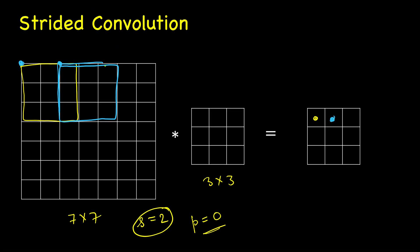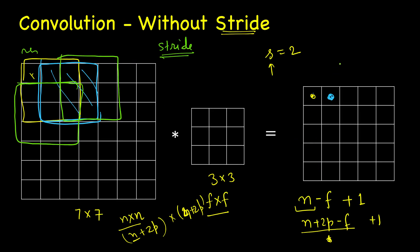So we will place the window here, do element-wise multiplication and calculate this value. Then we shift by two steps so whatever was the top left corner of this window now it will be here. Again do element-wise multiplication and add all these values to calculate this. Next again two steps. And now we cannot move any further.